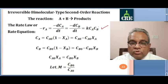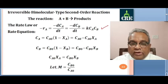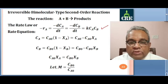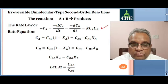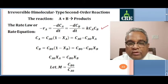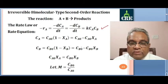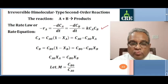For this second order bimolecular reaction, 1 mole of A is reacting with 1 mole of B to give products. So the rate of disappearance of A will be the same as the rate of disappearance of B. We know CA equals CA0 into 1 minus XA, which can be written as CA0 minus CA0 XA. CB equals CB0 into 1 minus XB, which can be written as CB0 minus CB0 XB. If 1 mole of A is consumed, then 1 mole of B is consumed.